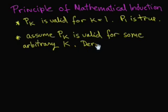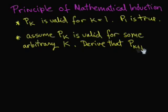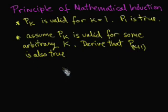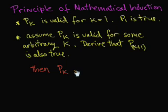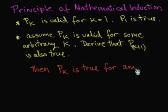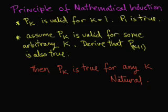The principle of mathematical induction is executed in just two steps. If P sub k is some proposition depending on k, where k is a natural number, we first prove that P sub 1 is true. Then, assuming that P sub k is true for some arbitrary k, we derive from there that P sub k plus 1 is also true. As a consequence, we have proved P sub k is true for infinitely many k.